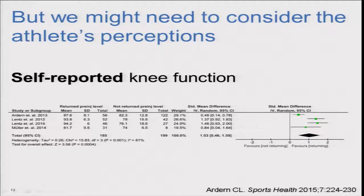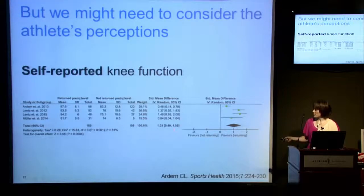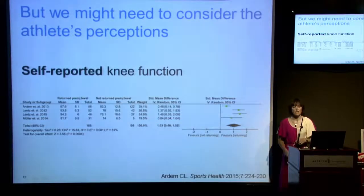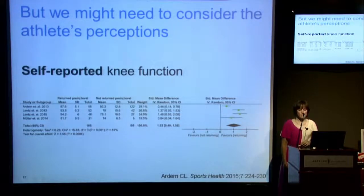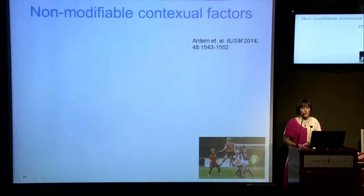We might need to consider what the athletes themselves think. Objective measures of physical function have been shown to not necessarily relate to athletes' perceptions of their function. This is nicely illustrated in our meta-analysis forest plot — when we put all available data together, there's a large effect for positive self-reported knee function favouring returning to the pre-injury level of sport. So the better you think your knee is, the more likely you are to get back.